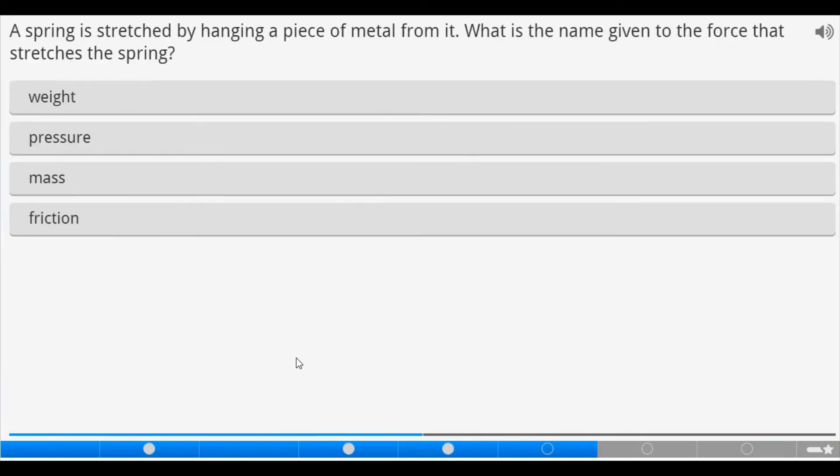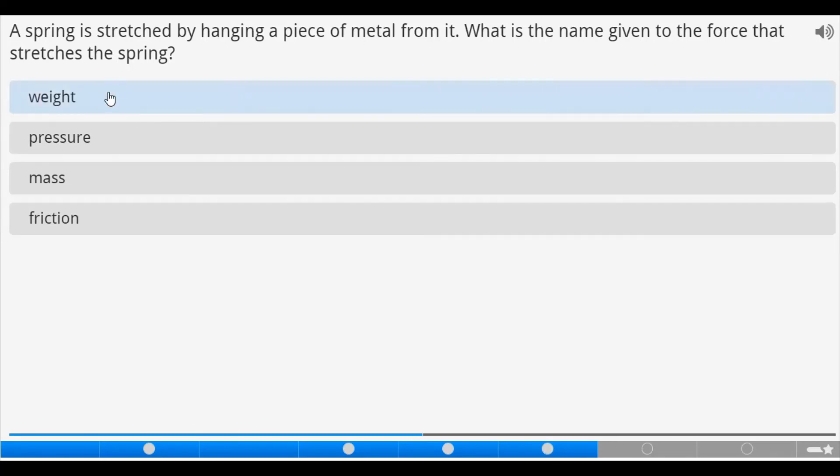Now the spring is stretched by hanging a piece of metal from it. What is the name given to the force that stretches the spring? Now what is the name of the force that acts downward? Because by the time you are adding weight, the spring is acting downward on the weight, and the weight is also acting downward. So the answer now will be weight. That's correct. Now let's move on.